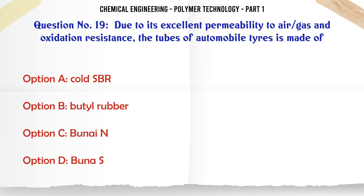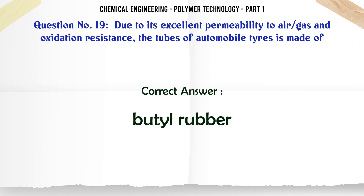Due to its excellent impermeability to air/gas and oxidation resistance, the inner tubes of automobile tires are made of: A. Cold SBR, B. Butyl rubber, C. Buna N, D. Buna S. The correct answer is Butyl rubber.